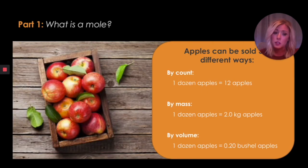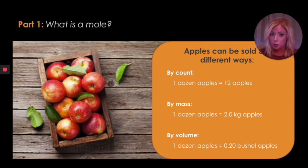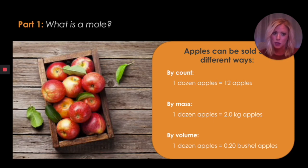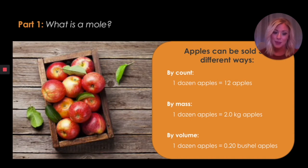Knowing that, we can put this in a mathematical way we can understand and actually use those numbers. If we talk about it by count, we can see that one dozen apples equals 12 apples — that's an equality we can use to set up a conversion factor. By mass, one dozen apples equals two kilograms of apples. And by volume, it's 0.2 bushels of apples.